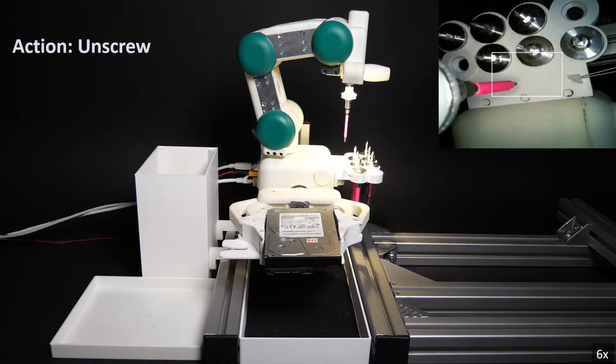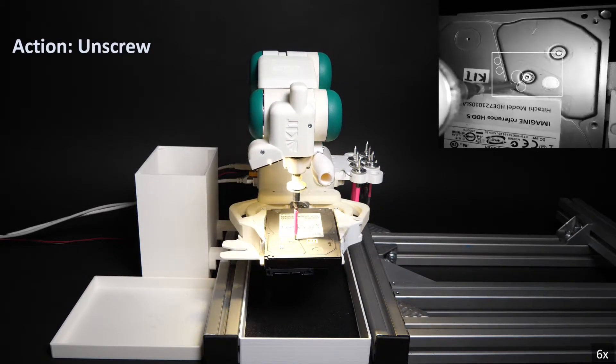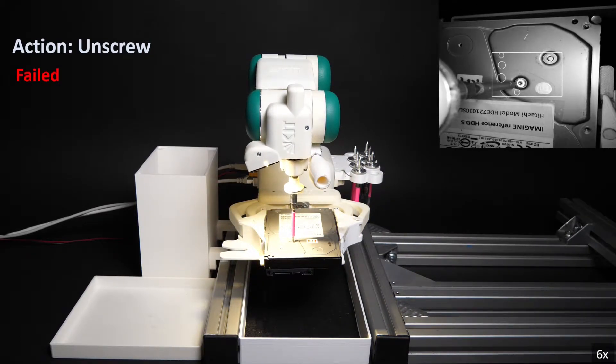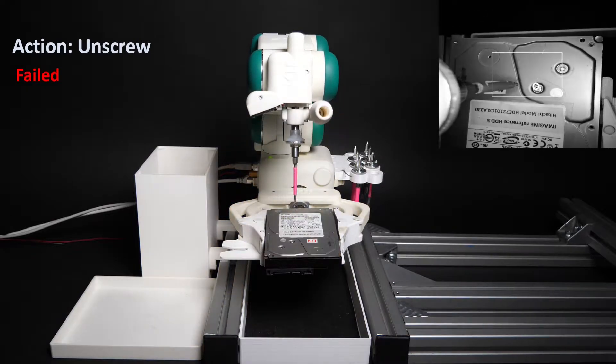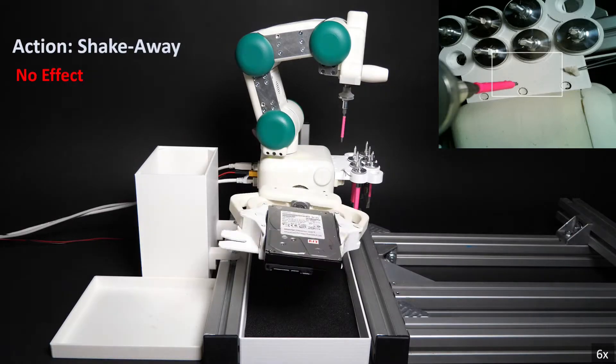The robot calibrates the screwdriver using a tool-mounted camera, as shown on the top-right corner, and then uses the visual-solving controller to insert the tool-tip into the screw. However, due to accumulated error in the whole system, the unscrew action might fail since it requires sub-millimeter accuracy. This leads to no effect of the shake-away action.